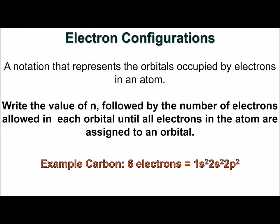In carbon, an atom with six electrons, the electron configuration is 1s2, 2s2, 2p2.